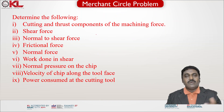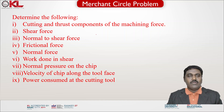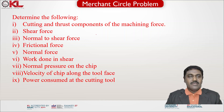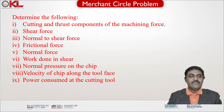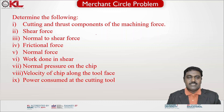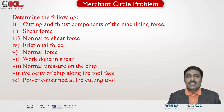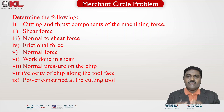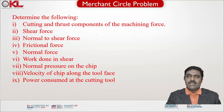From this data we need to determine the following: first, cutting and thrust components of the machining force; second, shear force; third, normal to the shear force; fourth, frictional force; fifth, normal force; sixth, work done in shear; seventh, normal pressure on the chip; eighth, velocity of chip along the tool face; and ninth, power consumed at the cutting tool. Most of these parameters can be easily found once you know the merchant circle diagram and all the force components.